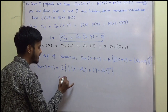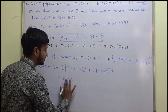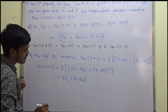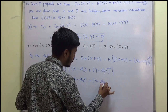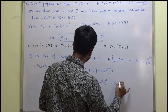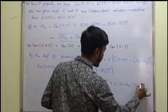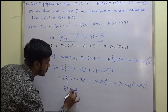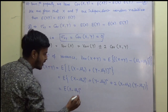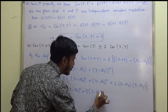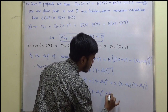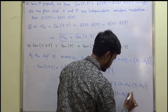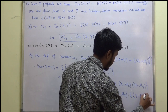Now applying the (a + b)² formula, this becomes: expectation of (x minus μx)² plus expectation of (y minus μy)² plus two times expectation of [(x minus μx)(y minus μy)].